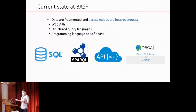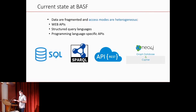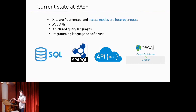Currently at BASF, data is quite fragmented. It's a large international company with different access modes to data because data is stored in different kinds of data stores, depending on the data producer and legacy systems — sometimes from a newly integrated company. The data is quite heterogeneous. Ways to access it include web APIs such as REST APIs, SQL query languages, Spark, and graph databases such as Neo4j.